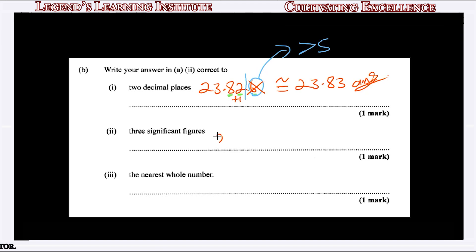For part 2 of B, we express 23.826 correct to 3 significant figures. Counting the significant digits: first is 2, second is 3, third is 8, fourth is 2. We put a line between the 8 and the 2. Since 2 is less than 5, we drop everything to the right and keep 23.8. So our answer is 23.8 correct to 3 significant figures.